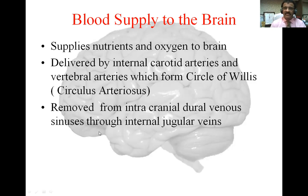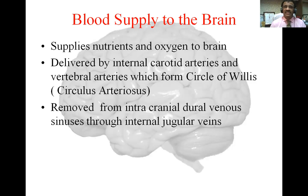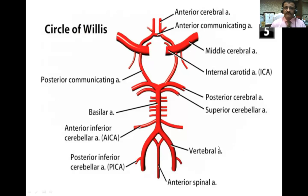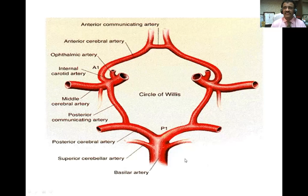Used venous blood is removed from intracranial venous sinuses through the internal jugular vein. Here you can see the actual circle of Willis — two internal carotid arteries, the basilar artery formed by two vertebral arteries, communicating branches, and cerebral branches. This is called the circulus arteriosus, and these are its branches.